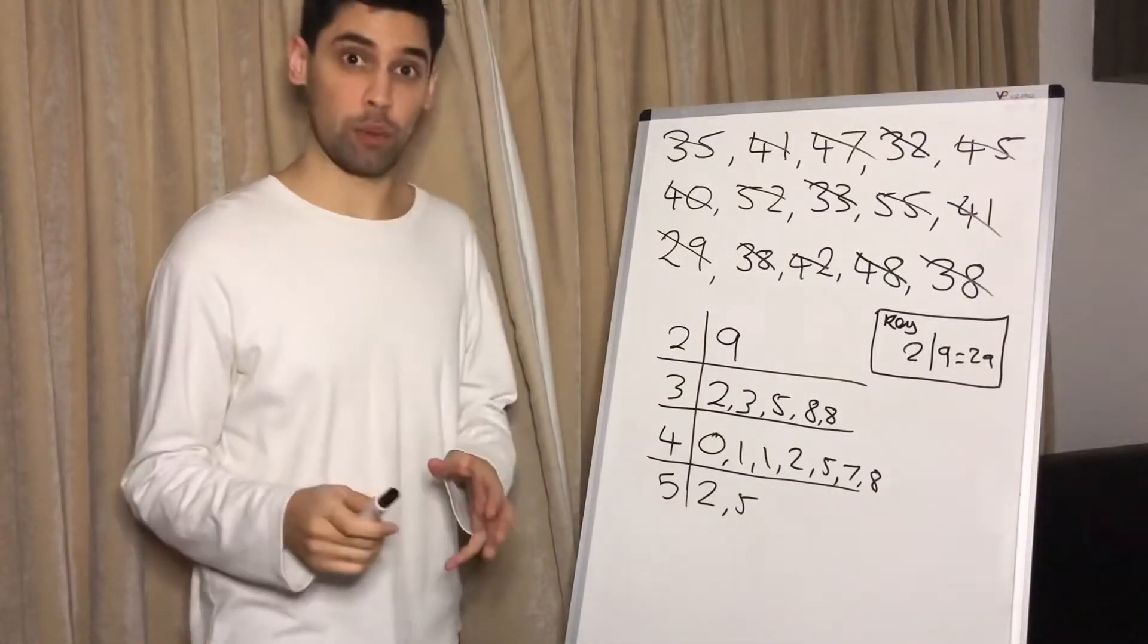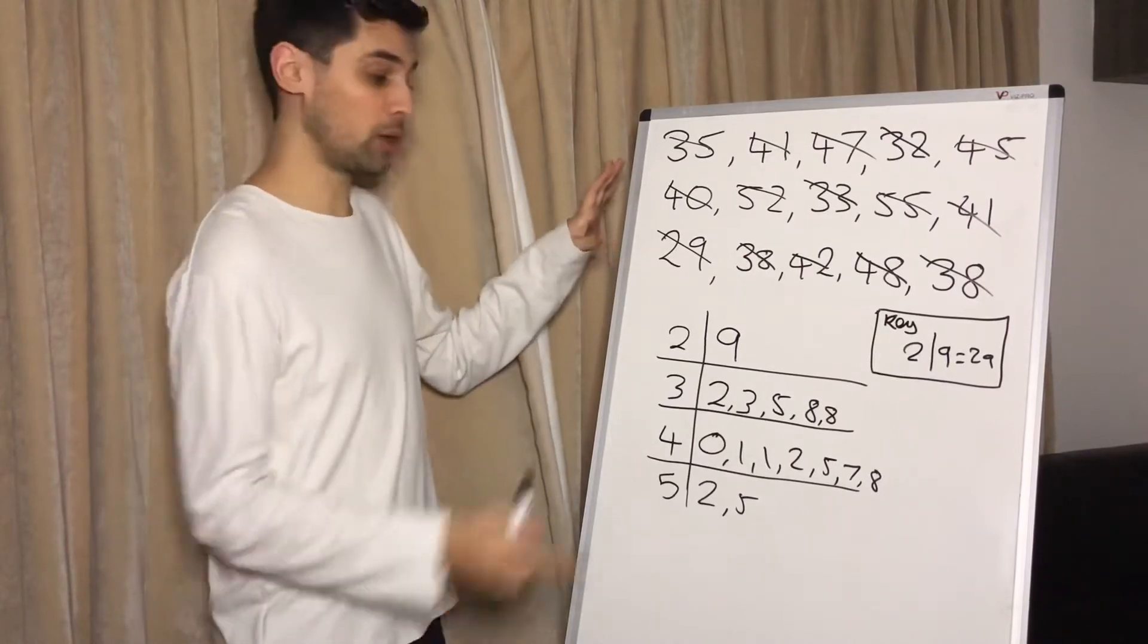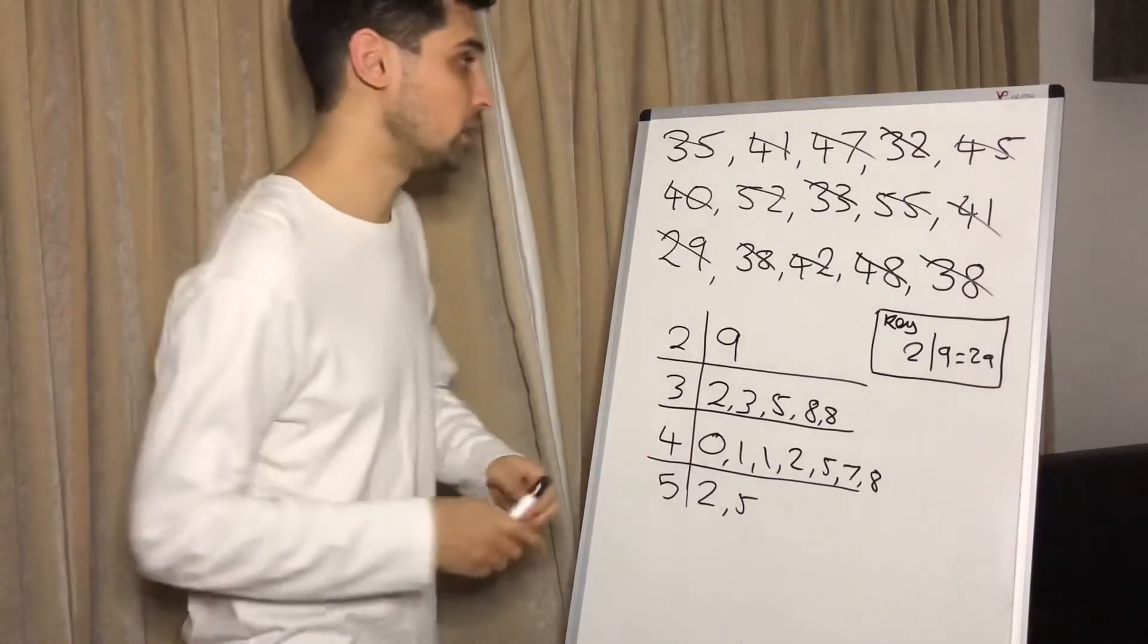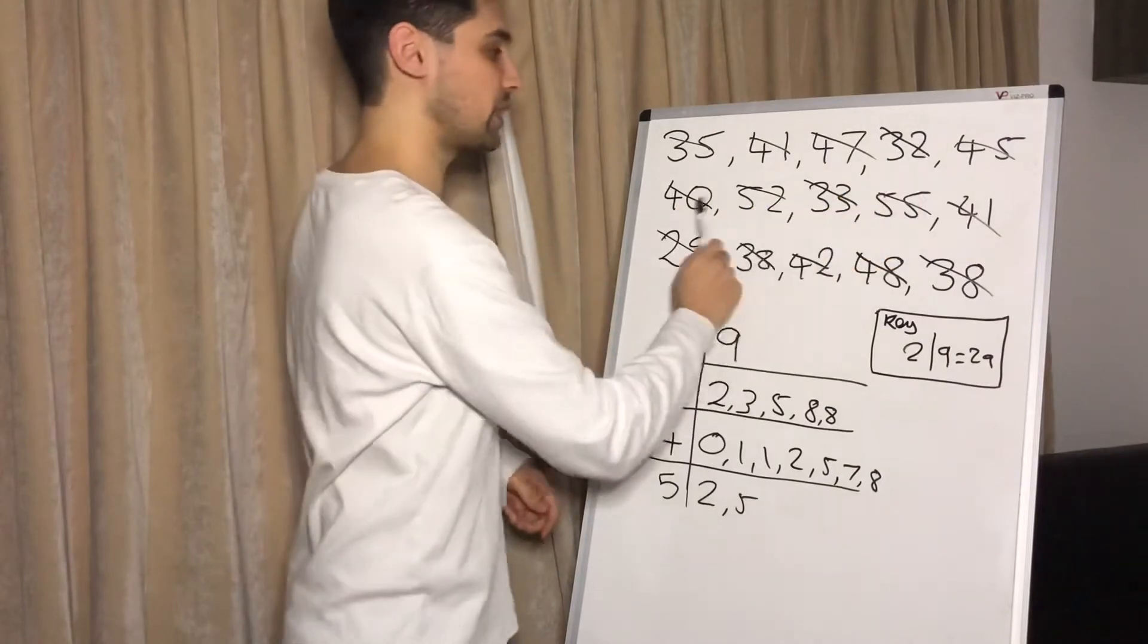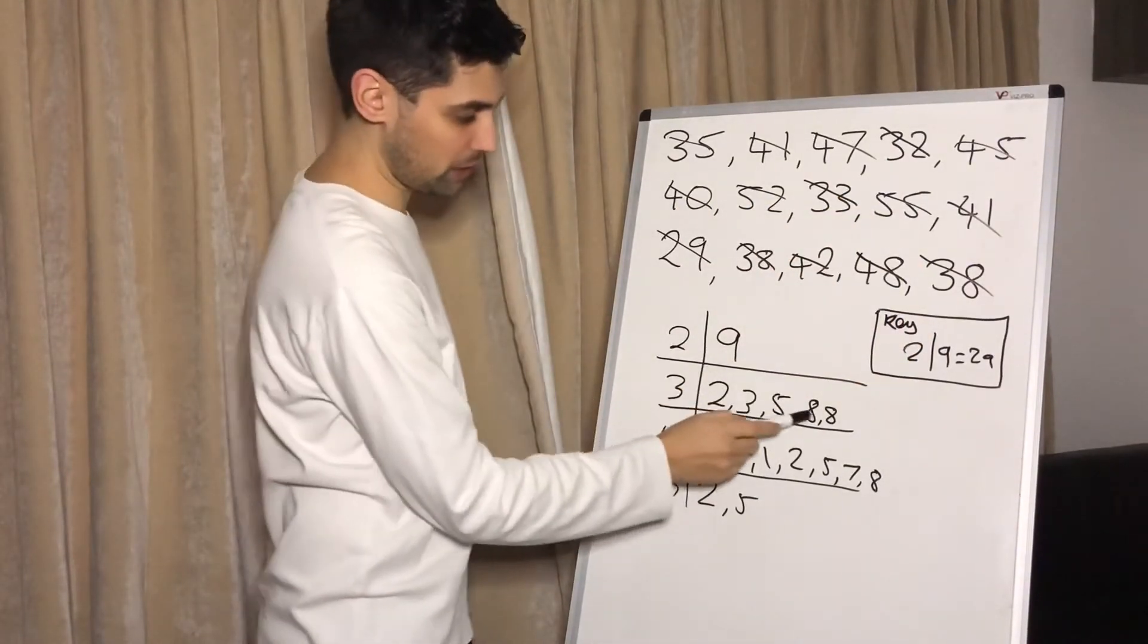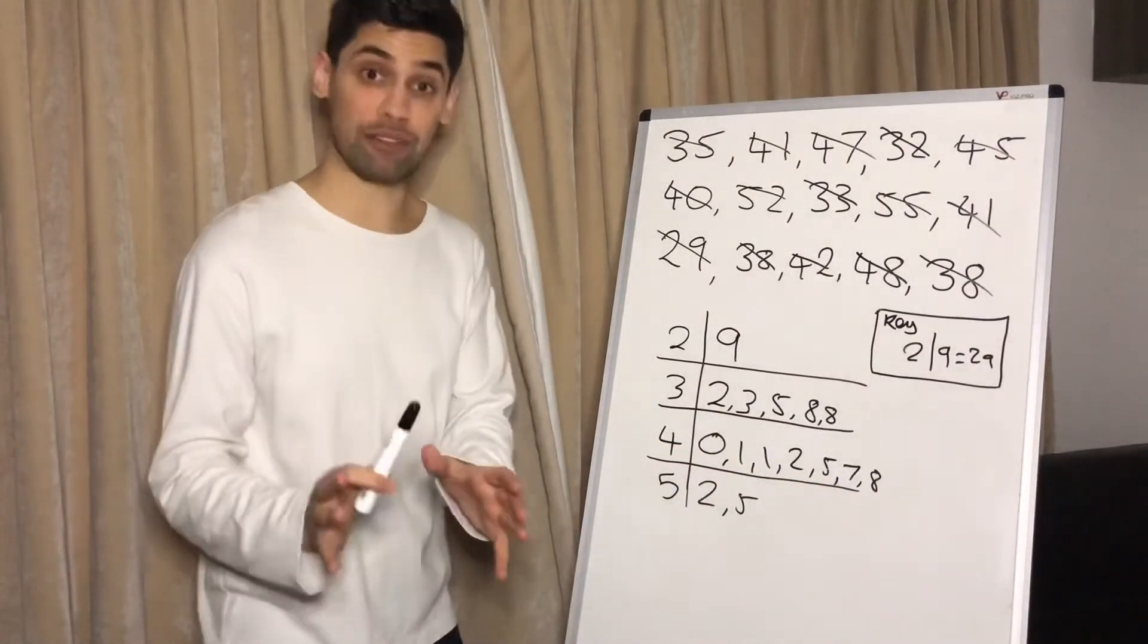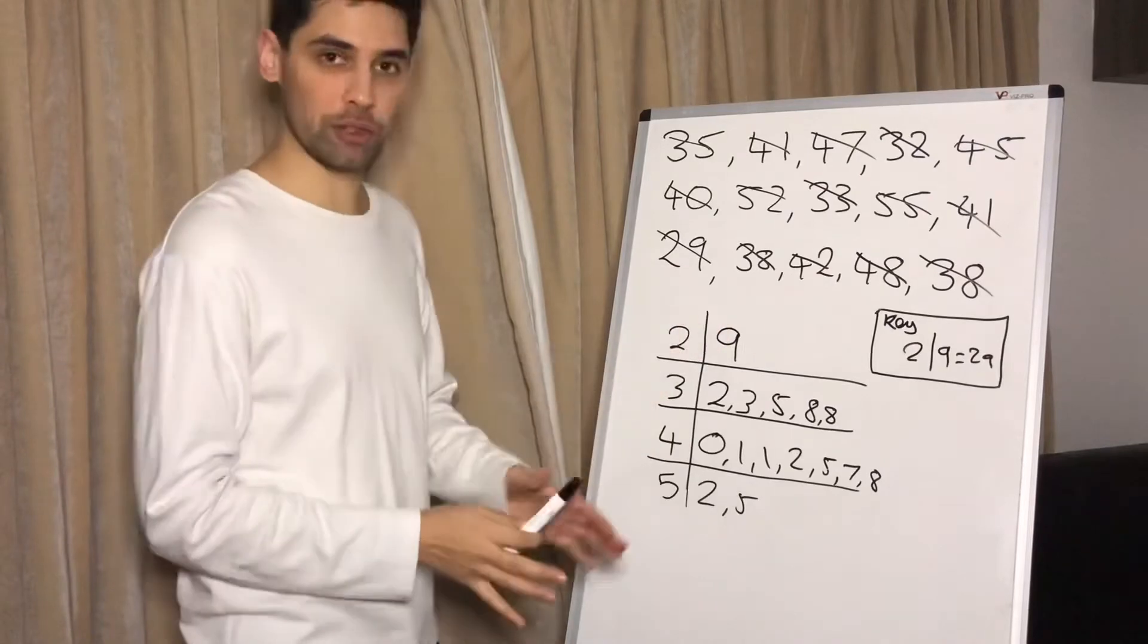Something I always like to do to double check when we do a stem and leaf diagram is count how many numbers we had originally and then count how many numbers we got here, just to make sure we haven't left any out. So 1, 2, 3, 4, 5, 6, 7, 8, 9, 10, 11, 12, 13, 14, 15 in here. 1, 2, 3, 4, 5, 6, 7, 8, 9, 10, 11, 12, 13, 14, 15. Great. So we haven't left any out. So we can be fairly confident that this is now correct.